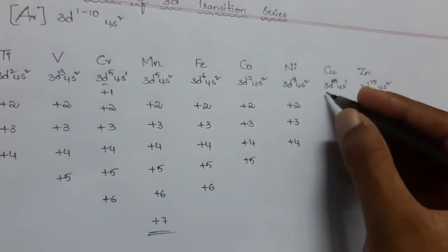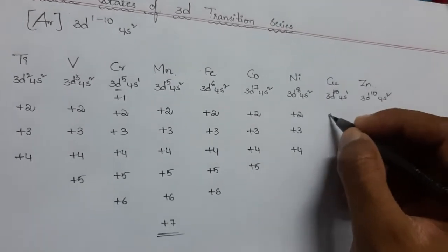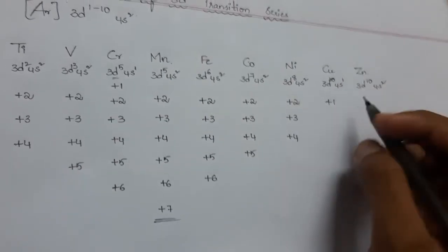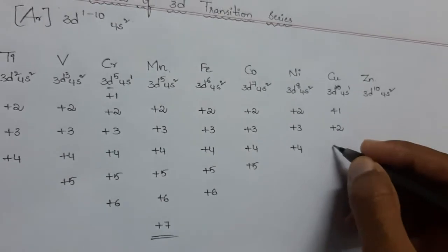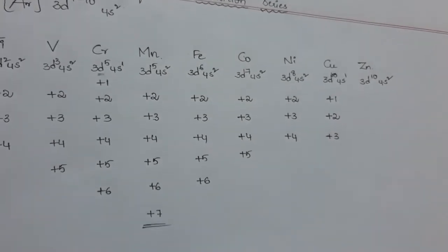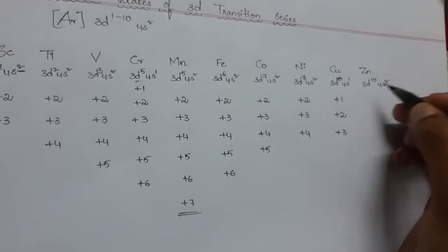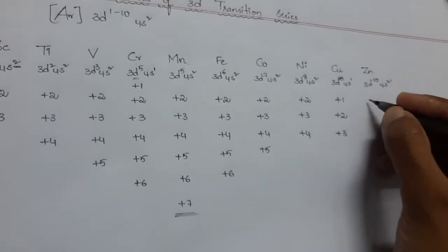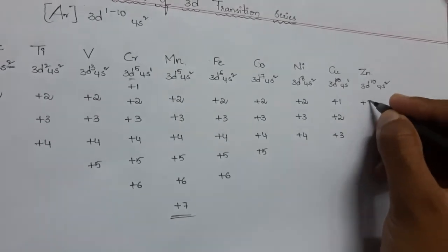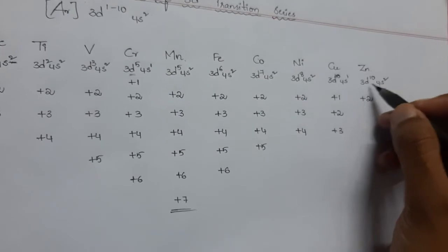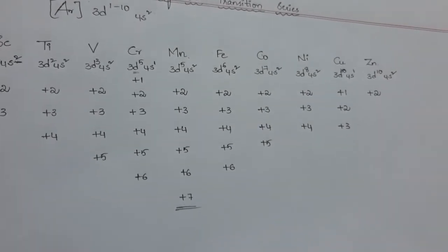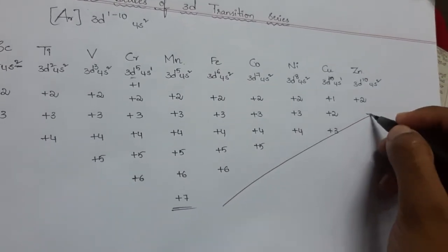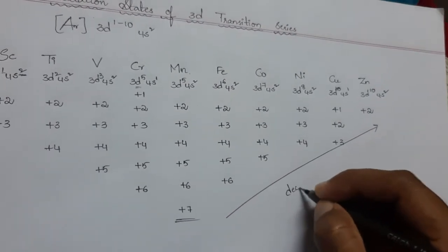Copper has oxidation states of +1, because the s orbital has only one electron, and also +2 and +3. Zinc has an electronic configuration of 3d¹⁰ 4s² and can exhibit only the oxidation state of +2, as the d orbital remains stable and completely filled. So we can observe that from manganese to zinc the oxidation states go on in decreasing order.